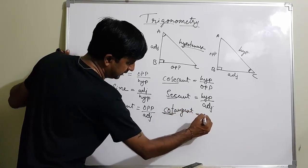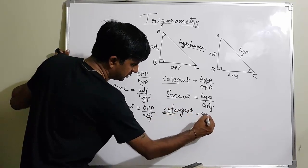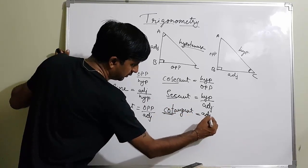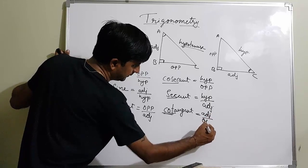The reciprocal of tangent is cotangent (cot): cotangent equals adjacent divided by opposite.